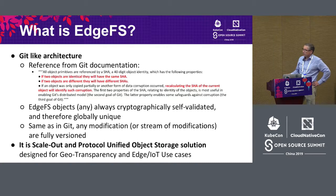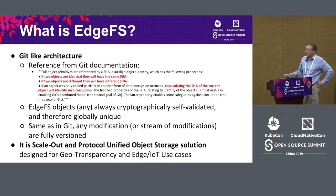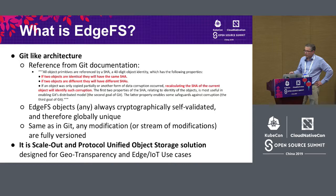EdgeFS objects are always cryptographically self-validated and therefore globally unique. It doesn't matter where your data or metadata is located — it will always have exactly the same signature, enabling global verification. You can think about the benefits of a global cache: it's totally immutable storage, you don't need to invalidate the cache, making it scalable and fault-tolerant. Same as in Git, any modification is fully versioned. EdgeFS is a system that manages versions — whether it is a block device, object file, or NFS scale — any modification will be versioned.